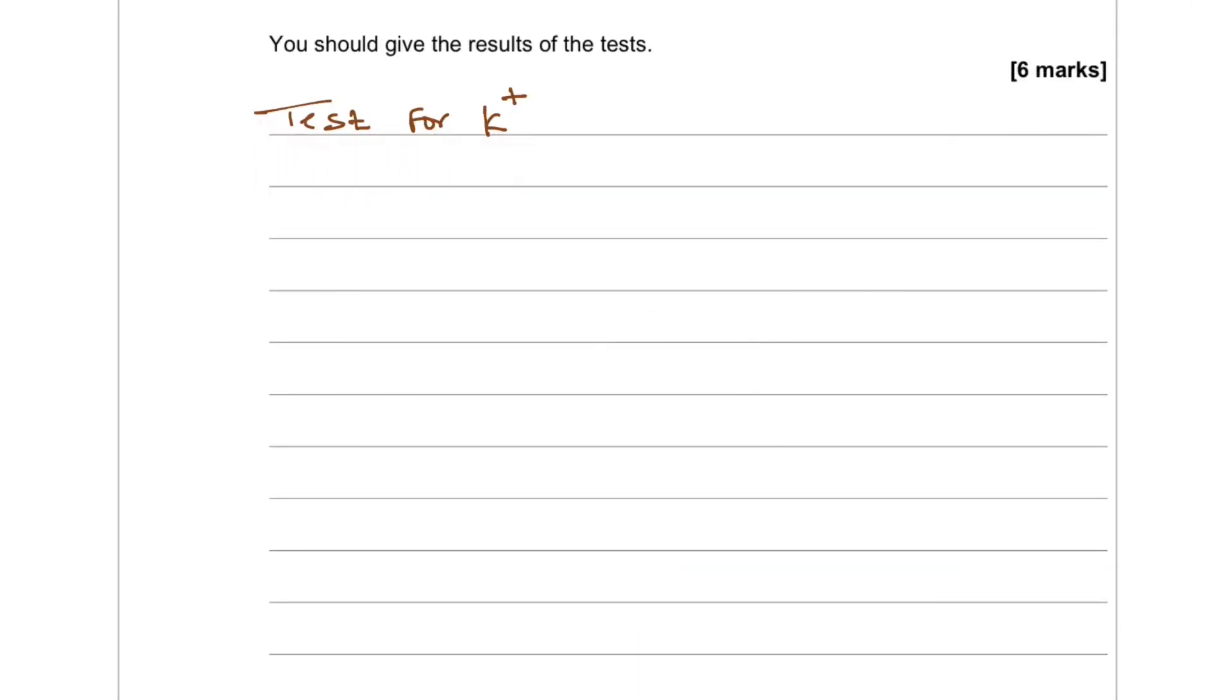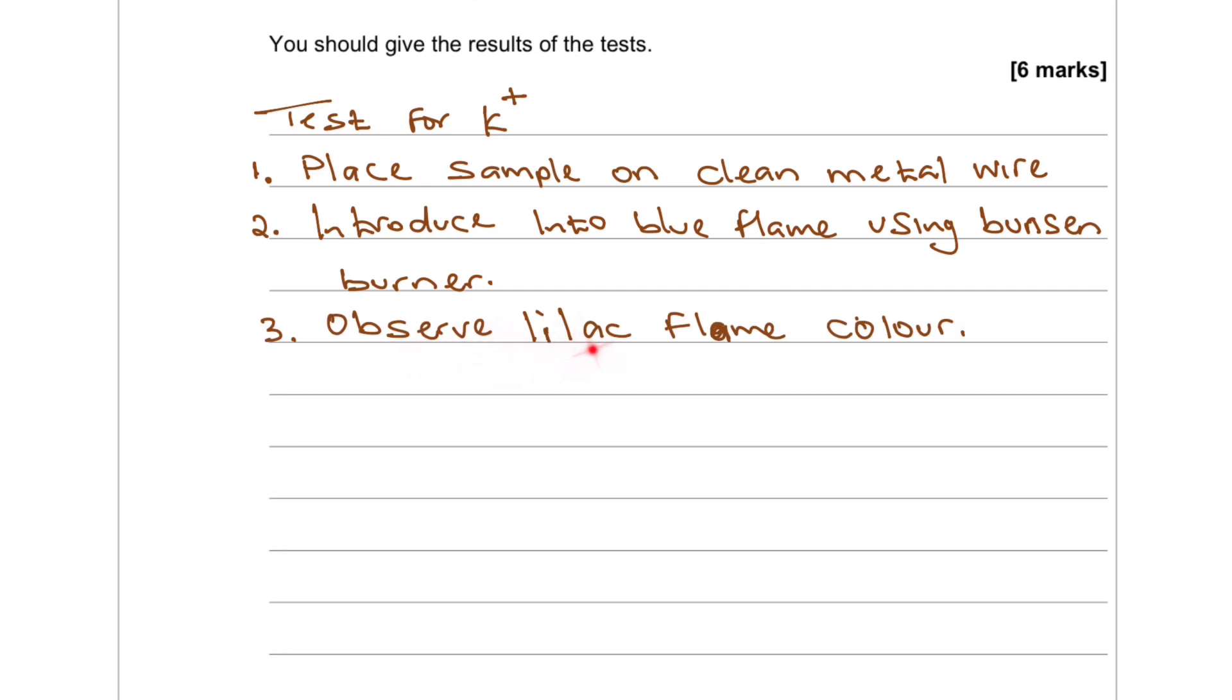To test for potassium ion: 1. Place a sample on clean metal wire. 2. Introduce into blue flame using Bunsen burner. 3. Observe lilac flame color.